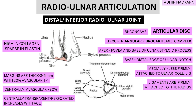In addition to its bony attachments, the TFCC is connected to surrounding ligaments. On the medial (ulnar) side it attaches to the ulnar collateral ligament, and on the radial side it attaches to other ligaments more firmly. The radial side has a larger attachment area because of the broader base, compared to the apex which has less surface area.